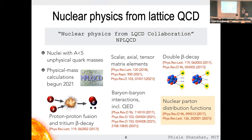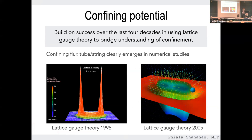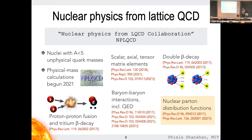Despite these challenges, we're doing it, largely thanks to clever algorithms. Over the last few years we've been able to study proton-proton fusion, tritium beta decay, scalar matrix elements relevant to dark matter scattering from nuclear ion detectors, double beta decay — both neutrino-full and neutrinoless — just this year, as well as EMC effects, meaning nuclear effects in the distribution of quarks inside nuclei directly from QCD. We're just at the very beginnings of this road.